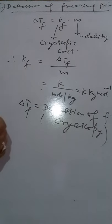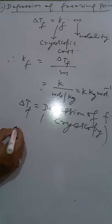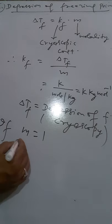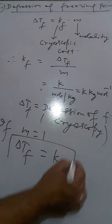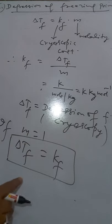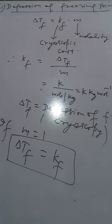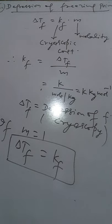We can also define KF. We know delta Tf is equal to KF into M. If molality is unity, then delta Tf is equal to KF. So the depression in freezing point when molality of the solution is unity is known as the molal depression constant — the depression in freezing point when one mol of non-volatile solute is dissolved per kg of solvent — and its unit is Kelvin kg per mol.